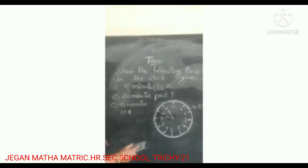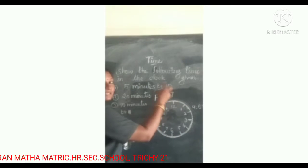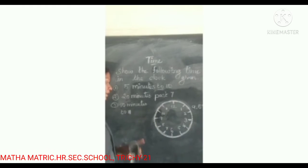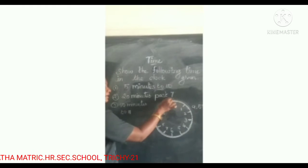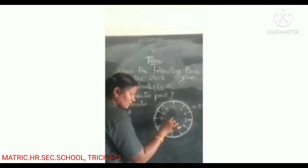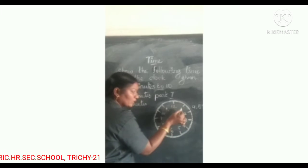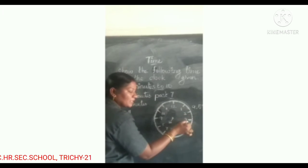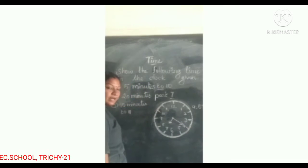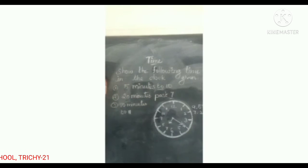Next one. Twenty minutes past seven. First you draw the hour hand on seven. And twenty minutes past — five, ten, fifteen, twenty. So the time is seven twenty.